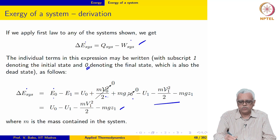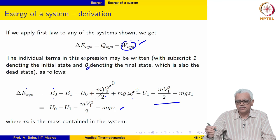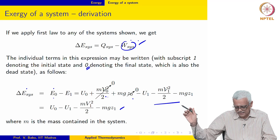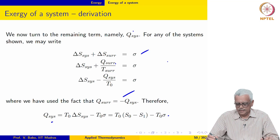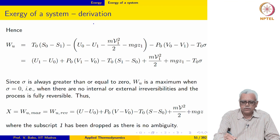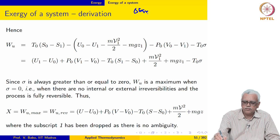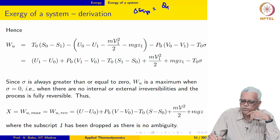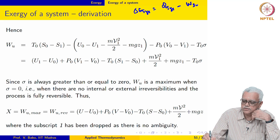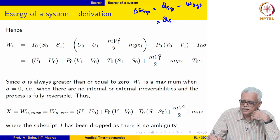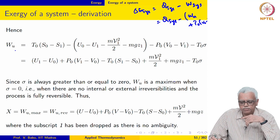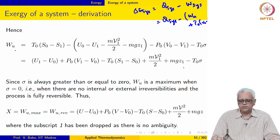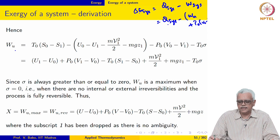We have decomposed all three terms. What we are going to do now is take W_U to the left-hand side and develop an expression for W_U. We basically wrote delta E_SYS equal to Q_SYS minus W_SYS, and W_SYS itself was written as W_U plus P0 times (V0 minus V1). We rearrange and then get this expression for W_U after substituting for Q_SYS and delta E_SYS.